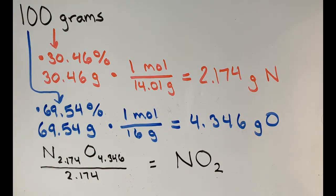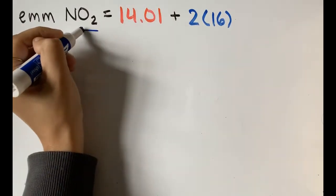Now for the final step, we just have to make sure the compound matches the sample weight that we have. The empirical molar mass of the compound is 14.01 grams of nitrogen plus 2 times 16 grams of oxygen, since we have 2 oxygen atoms in the compound.